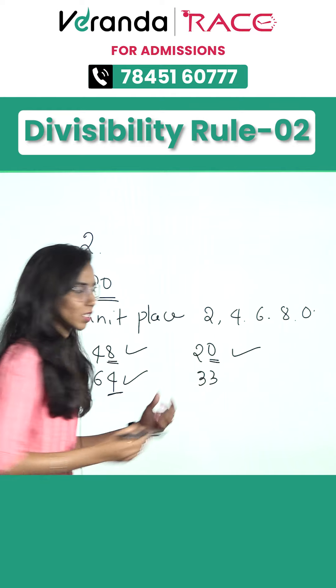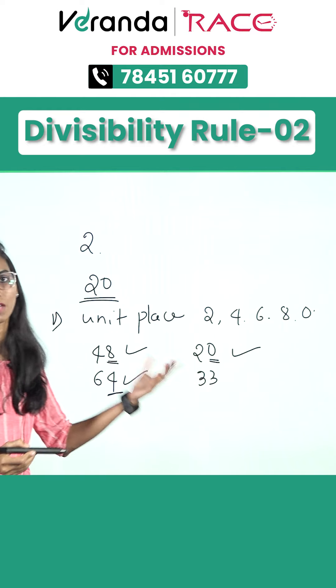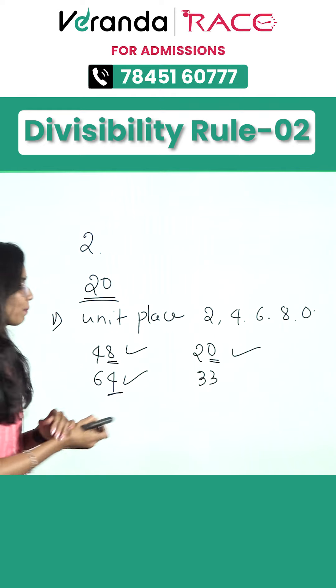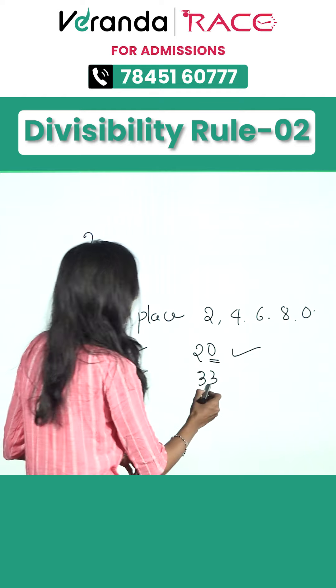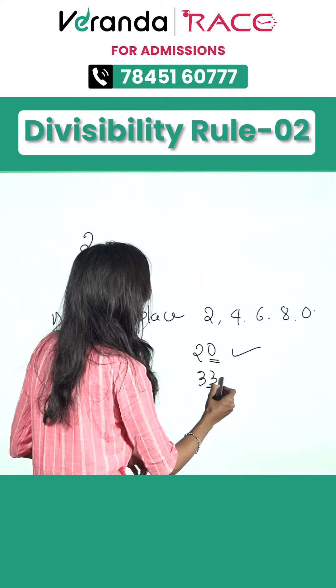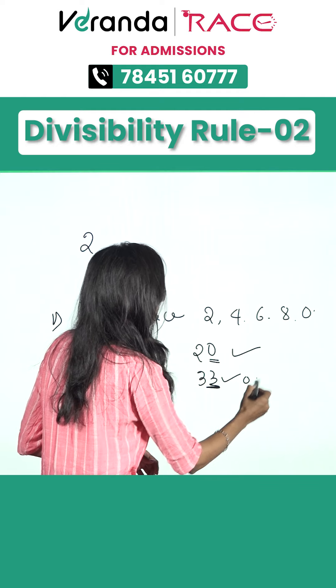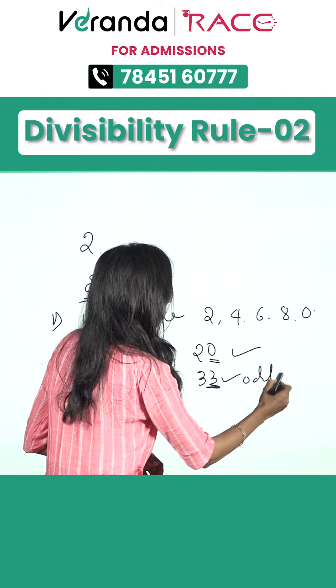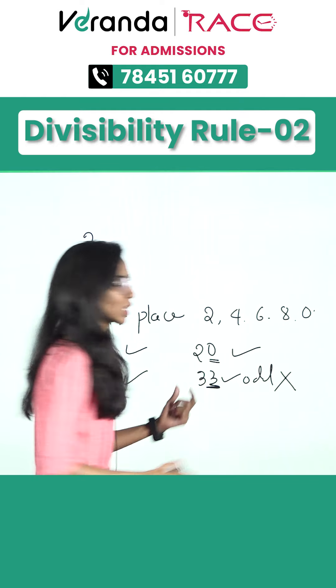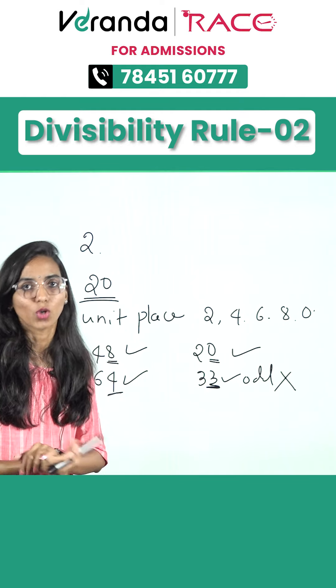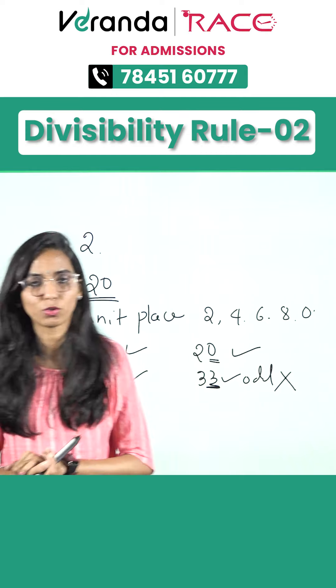Then, 33 — 33 is not divisible by 2. Why? Because, see here, we are having an odd number in the unit place, not an even number. So, 33 is not divisible by 2.